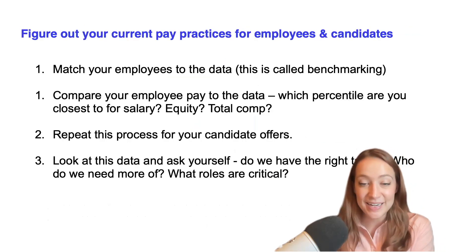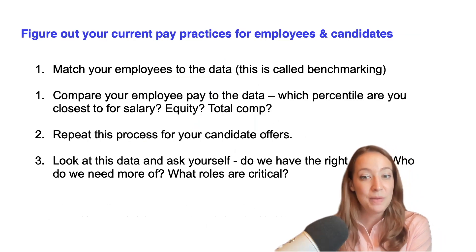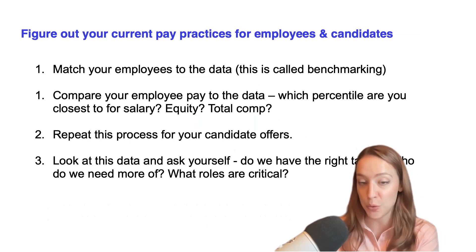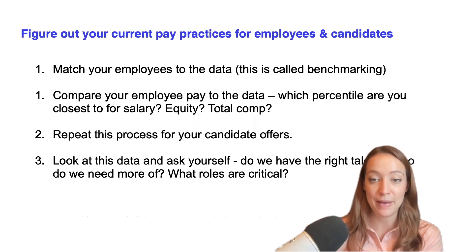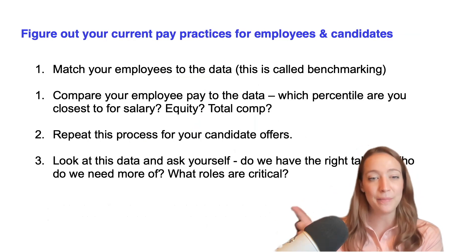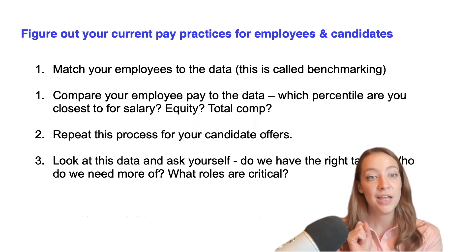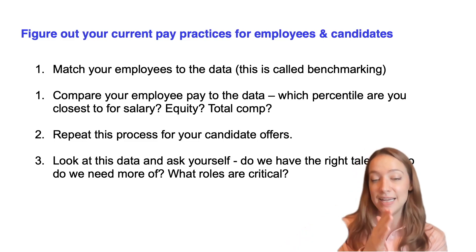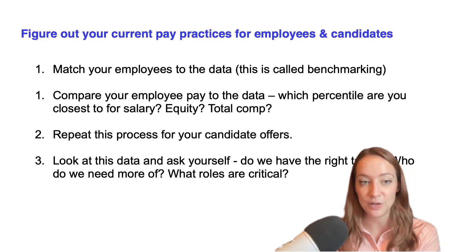Now, how you want to use this data: you need to match your employees to the data. This is typically what we mean when we use the word benchmarking — it's literally trying to tie to the survey codes. There's often a list of what those codes mean and the job descriptions they match, so go through your employees one by one and match. I know it can be tedious, but you do it once and it's a lot faster every time after. Next, you need to compare your employee pay to the data. Which percentile are you closest to for salary, for equity, total comp? You need to look at these individually, and the aggregate is going to tell you a story of how you compare against the people you're comping against.